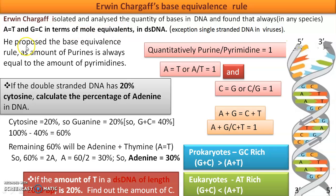In single-stranded DNA, equal amounts of purines and pyrimidines cannot be assumed. Double-stranded RNA, such as in RNA interference, also shows this equivalence. Chargaff proposed that purine is always equal in amount to pyrimidine — called the base equivalence rule. Quantitatively: purine/pyrimidine = 1, A/T = 1, C/G = 1, and A + G = C + T. In double-stranded RNA, wherever T appears, it becomes U.